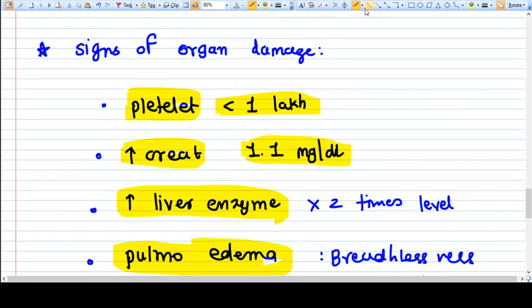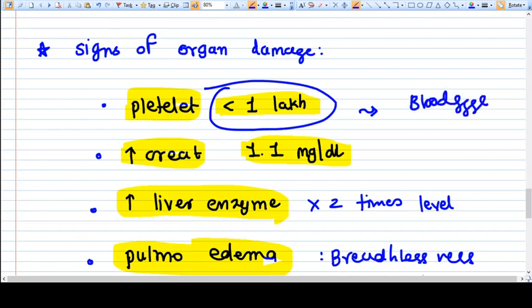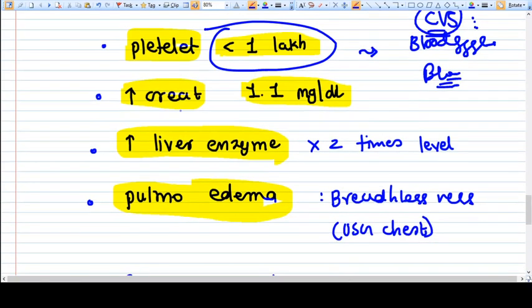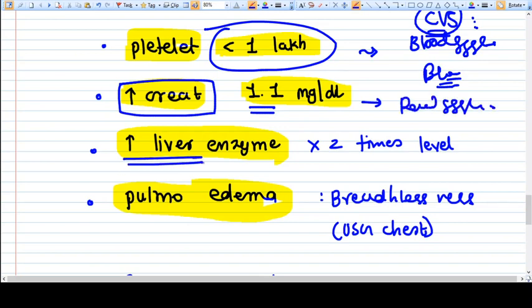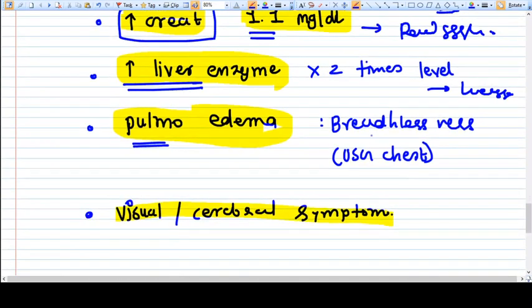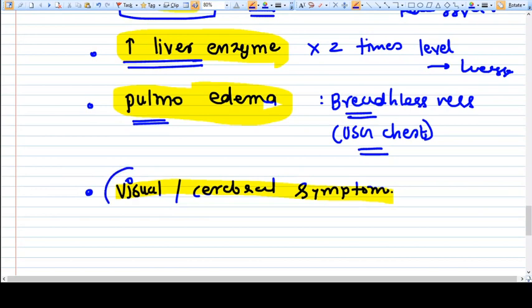If we have platelet counts less than one lakh, that means we have problem in the blood system, in the cardiovascular system. Increased creatinine means we have problem in renal system. Liver enzymes are increased, we have problem in liver system. Pulmonary edema, we have problem in respiratory system.